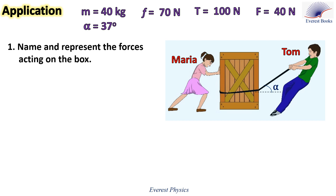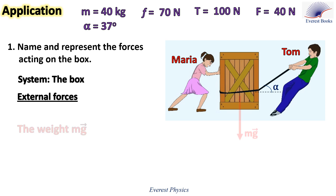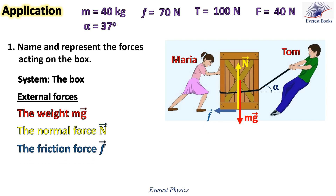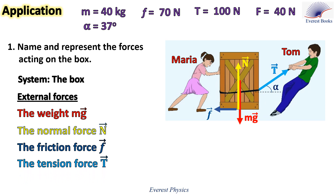Number one: name and represent the forces acting on the box. Our system is the box. The external forces acting on the box are: the weight mg, the normal force, the friction force directed horizontally to the left opposite to the direction of motion, the tension force T along the rope, and the pushing force F exerted by Maria.